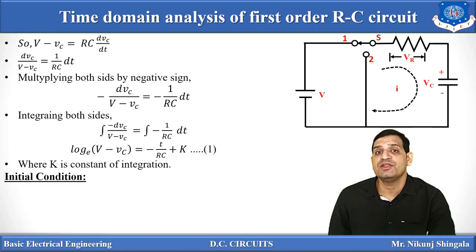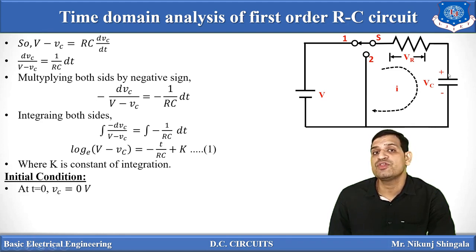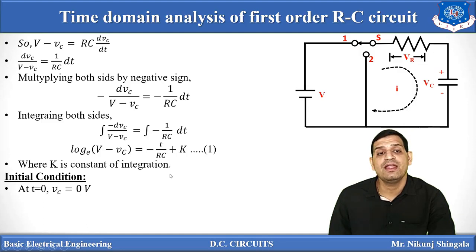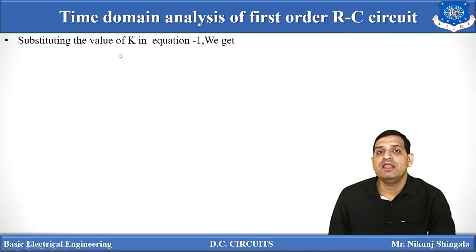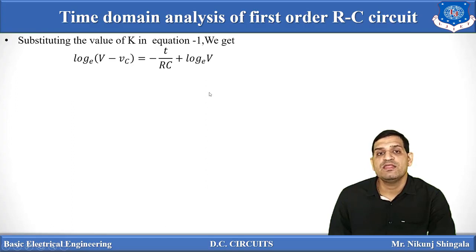At the initial time, what was the value of capacitor voltage? At t equals zero, when the switch was closed, there is no charge on the capacitor, so VC equals zero. Substituting this initial condition: ln(V minus 0) equals 0 plus k, so k equals ln(V). Now substituting k back into the equation, we get: ln(V minus VC) equals minus t/RC plus ln(V).